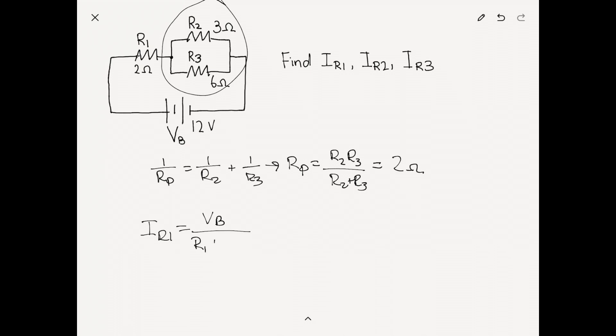And if we substitute in that value that we just got, we have R2, R3 over R2 plus R3. And simplifying a tiny bit, we have VB times R2 plus R3 over R1, R2 plus R1, R3 plus R2, R3. And substituting the values in, we get that the current at R1 is 3 amps.